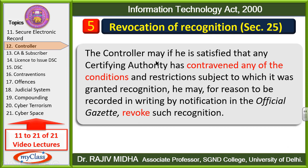Students, mein is point ko bahut simplify kar raha hoon — ise dhyan se suniyega. Controller agar is baat se satisfied hai ki certifying authority ne koi condition ko violate kiya hai, ya un restrictions ko — jinke base ke upar use certifying authority banne ka license diya gaya tha — usne un conditions ko toda hai, to woh yeh baat writing mein lega, aur official Gazette ke andar isko mention karne ke baad, woh us certifying authority ki recognition ko cancel kar dega.